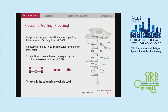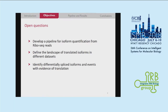Ribo-seq reads have already been used to identify alternatively spliced events that are engaged by the ribosomes, but in this work we were wondering what is the pattern in the whole series. With these ideas in mind, we had the following goals: to develop a pipeline for isoform quantification from ribo-seq reads, to define the landscape of translated isoforms in different datasets, and also to identify differentially spliced isoforms and events with evidence of translation.